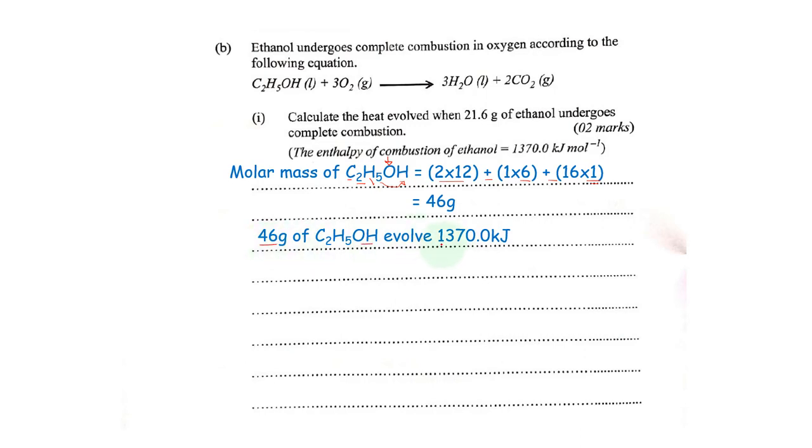Now what about when we burn 21.6 grams of ethanol? So for 21.6 grams of ethanol, we shall have 21.6 times 1370 divided by 46. So here we are simply cross multiplying. 46 is to 1370, 21.6 is to x. So we just cross multiply.